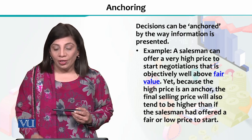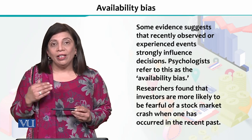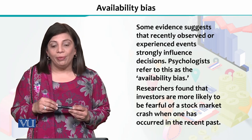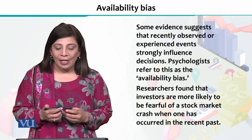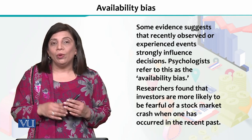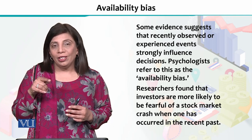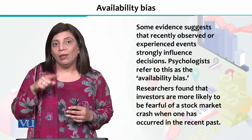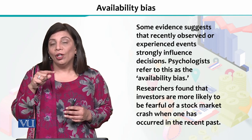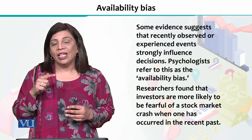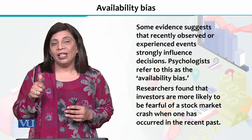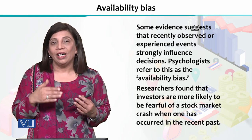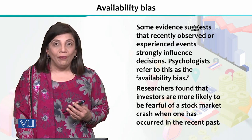This is another important thing we need to look at. Another thing which creates information bias is availability bias. Availability bias means that if there was a crash in the stock market yesterday, or the stock exchange index performed very well, then today whatever trading you are going to do will be affected by that recent happening. That results in availability bias.